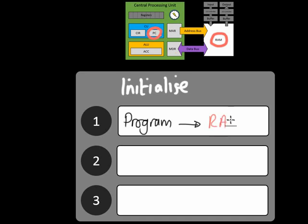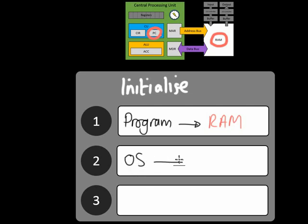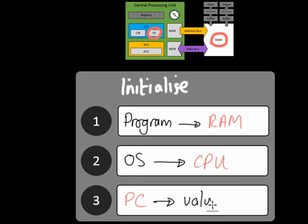The CPU can't access it and can't run it unless it's stored in the RAM. So the first thing to do is the secondary storage device passes the data into the RAM. The operating system then instructs the CPU where the actual program has been put in memory. Finally, the program counter is set to the value of the memory location where the program has been stored. That's the initialize section — it gets the first part of the cycle going.